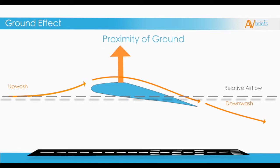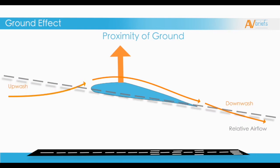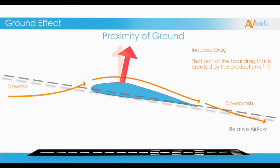Looking at our relative airflow, we can see that it is actually following the upwash and downwash curves. We know that lift acts perpendicular to the relative airflow. So in practice, the lift vector being produced by the wing is slightly tilted backwards. From the four forces in flight, we also know that any force acting towards the rear of the airplane is drag. Induced drag is that part of the total drag that is created by the production of lift. So the lift, which points straight up, is tilted back slightly — that slight change of direction is enough to make the lift also create some drag.